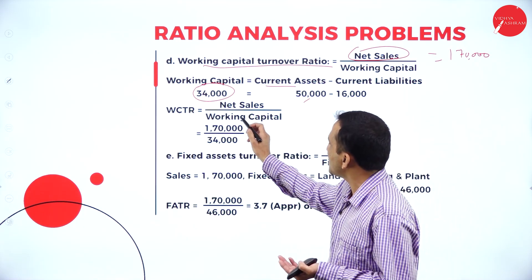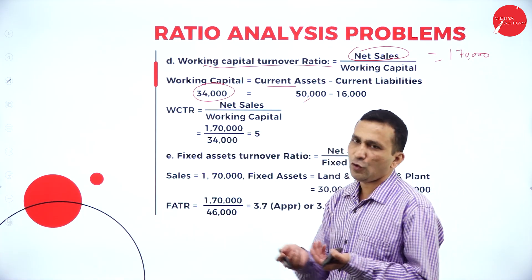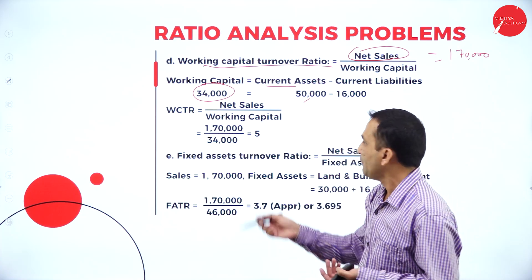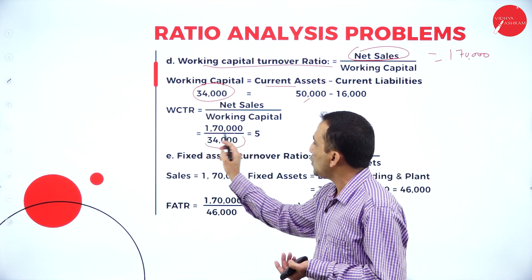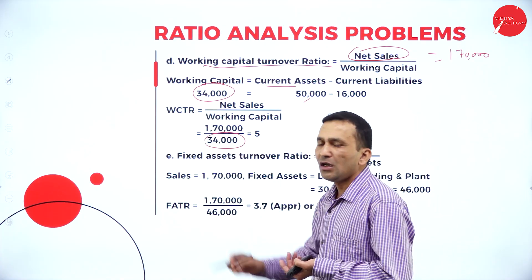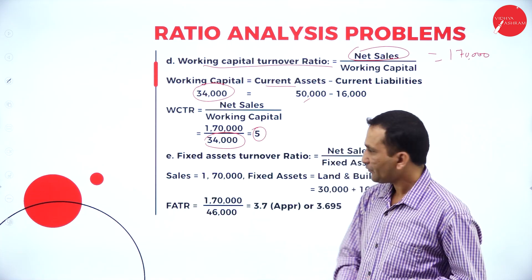Whatever is required for the formula: net sales 1,70,000 divided by working capital 34,000 — we are getting 5.